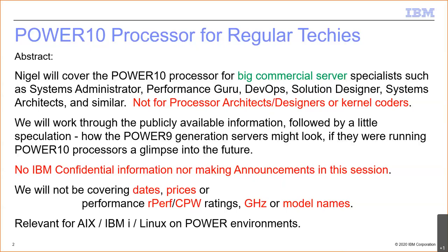The dates for when the Power 10 servers will come out are not available, but there is a little leakage — a senior vice president said it's going to be the second half of 2021, and one of the chip designers in a public video says it's going to come out about a year from now, with the video made in October. Prices are kept very secret until the last minute. The Rperfs and CPW ratings don't come out until we have the GA machine, as we need actual hardware running GA firmware, operating systems, and applications.